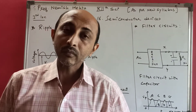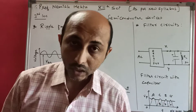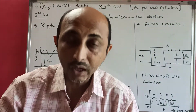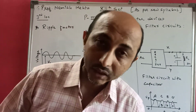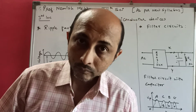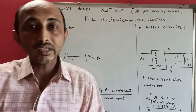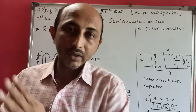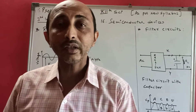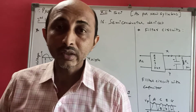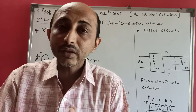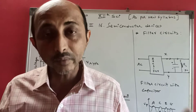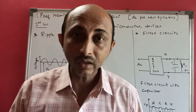If the ripple factor is reduced, the efficiency will also be reduced. The ripple factor, in simple terms, is the part which is not fully converted into DC. That is the ripple factor - clear?